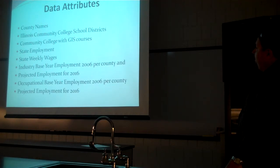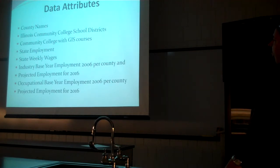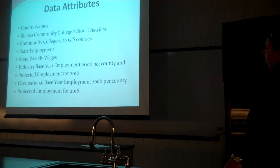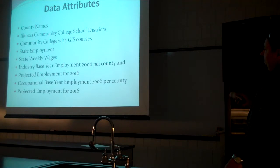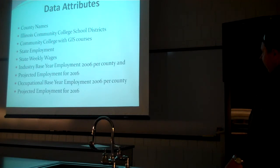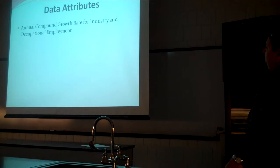These are all the different attributes I used, including county names. The maps I did include a state employment map — total employment for the state of Illinois — the average weekly wage for each county, and the industry jobs that a GIS technician falls under. I did a 2006 map and then a projected 2016 map, the same for occupational, and also the annual compound growth rate.